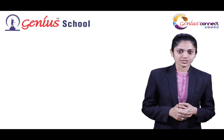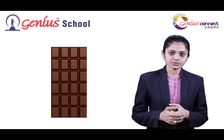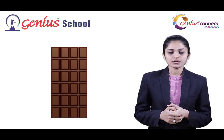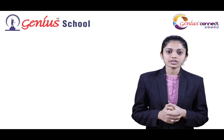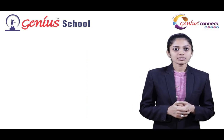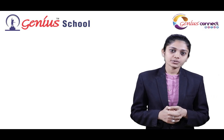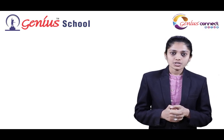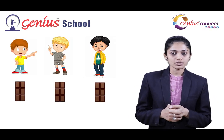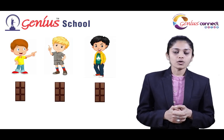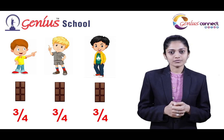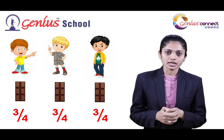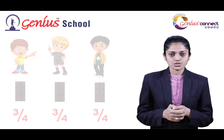Now suppose your uncle asks you how much chocolate you had. You can't say you had one big chocolate because you divided it into four equal parts. But as you now know what a fraction is, you can proudly say that you had one fourth part of the chocolate. Three parts of the chocolate were remaining out of four parts, so your remaining friends had three fourth part of the chocolate.